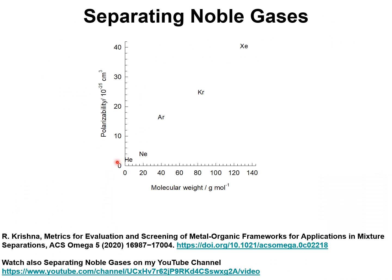The separation of noble gases such as helium, neon, argon, krypton, and xenon are essentially based on the differences in the polarizability that are in turn related to the molecular weight or molar mass of the noble gases.